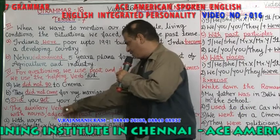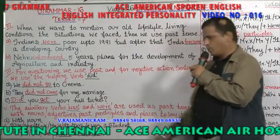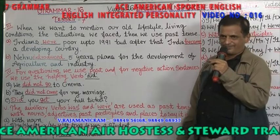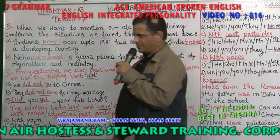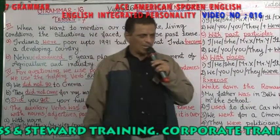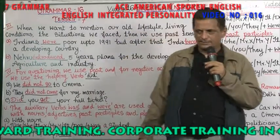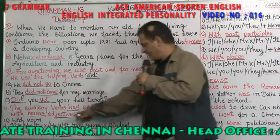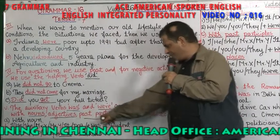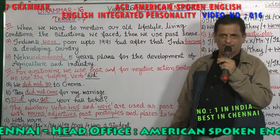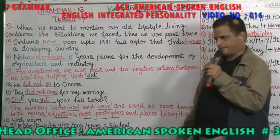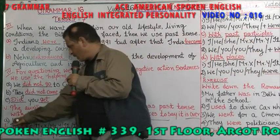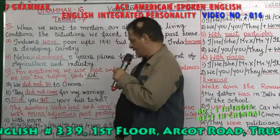Now, the auxiliary verbs 'was' and 'were' are used as past tense. Was is past tense. Were is past tense. We use past tense 'was' and 'were' with nouns, with adjectives, with past participles — for example: eaten, spoken, educated, married — and with places, to say that something is over.